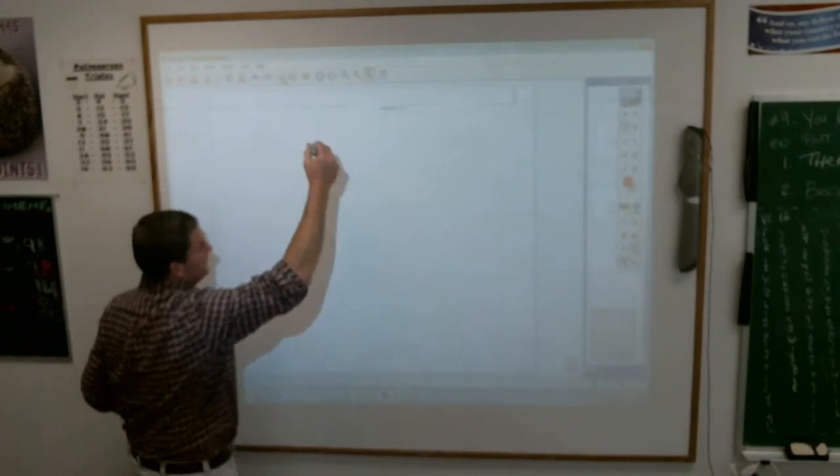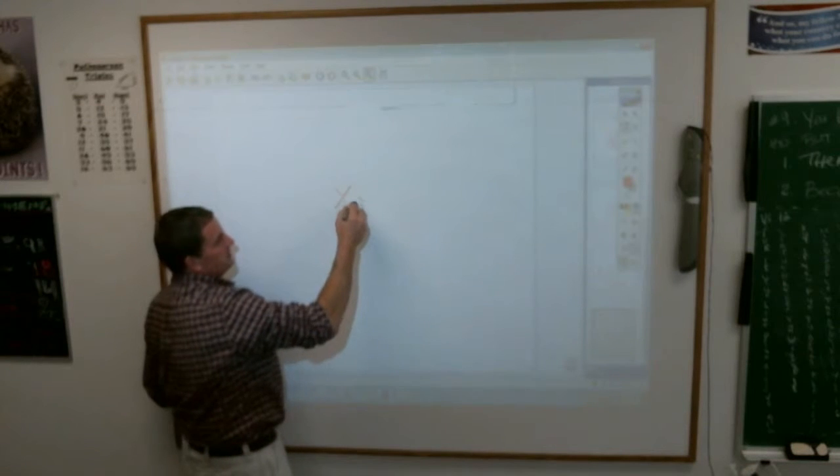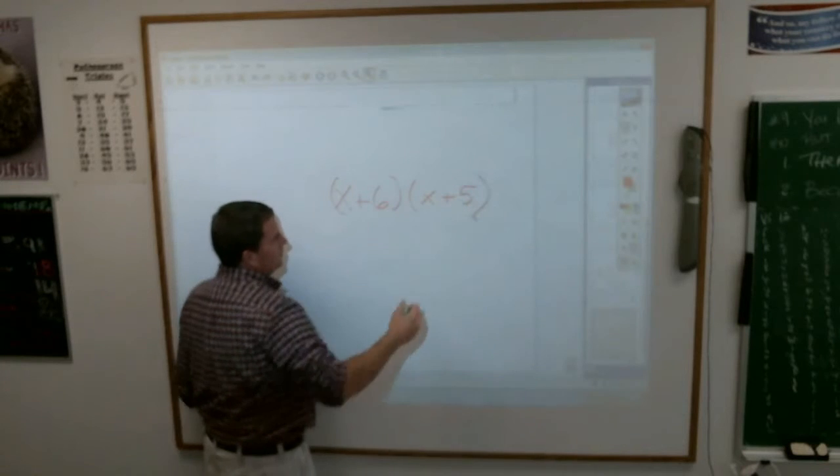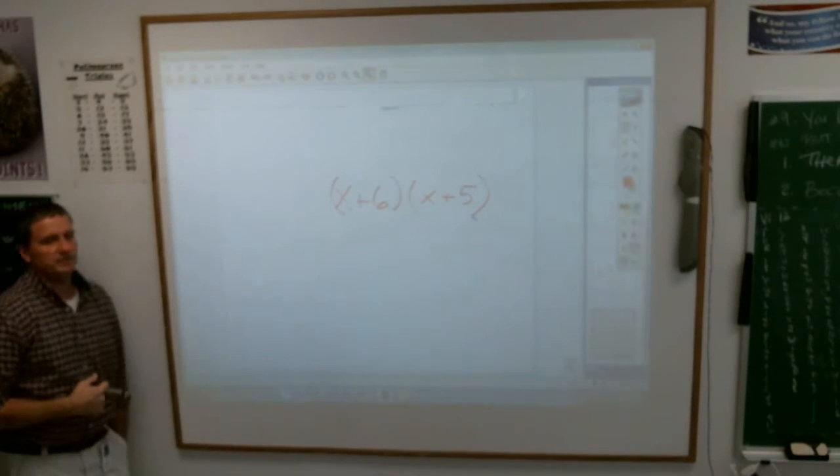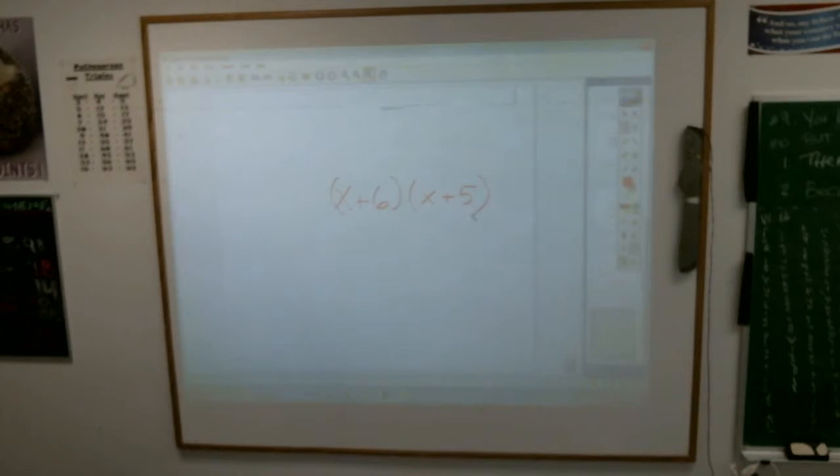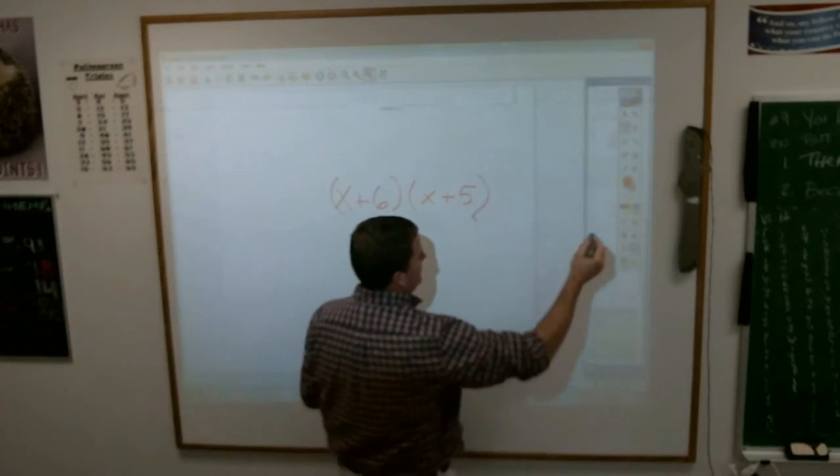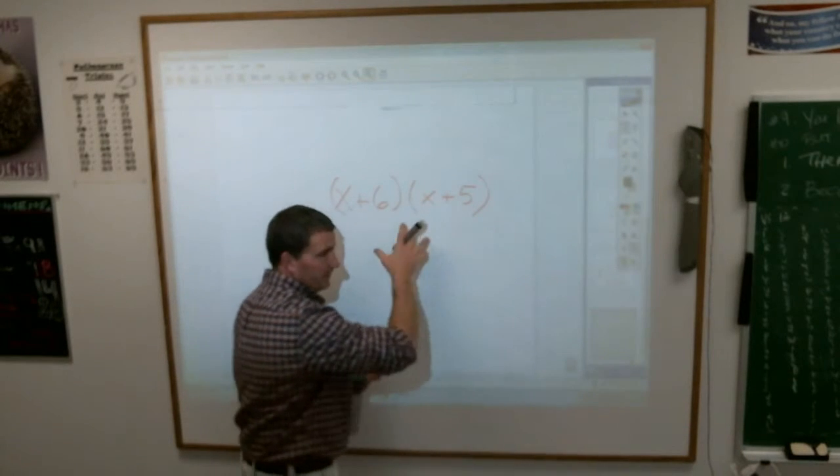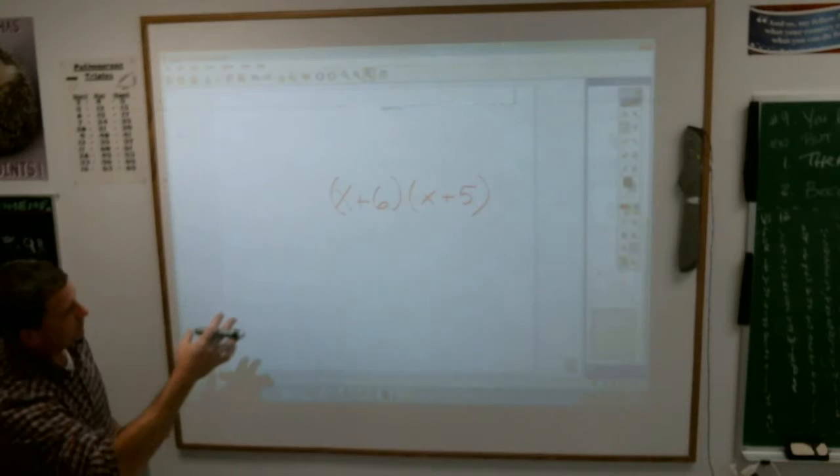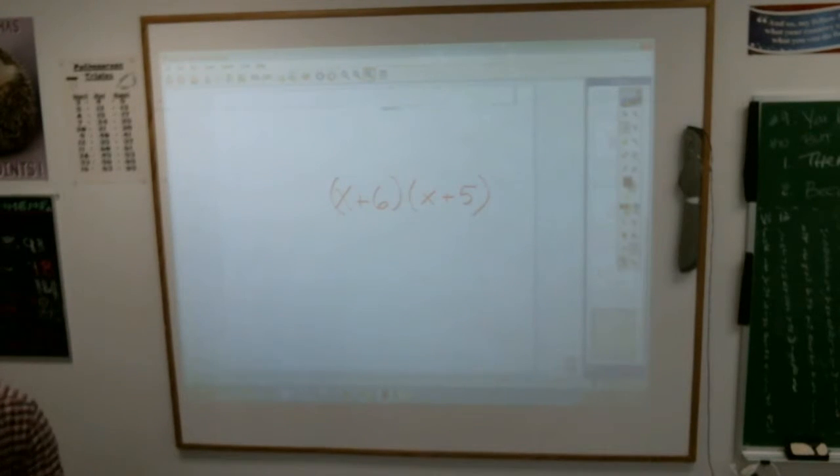Now, back to my binomial thing. Let's say I've got x plus 6 times x plus 5. Do you really, really, really want to draw all those squares every time you come up with a problem like that? No. And because you don't want to do that, there's a little, I can tell you, you can do this in your head. The answer to this is x squared plus 11x plus 30.